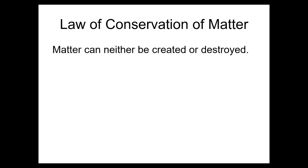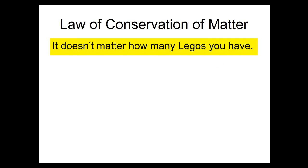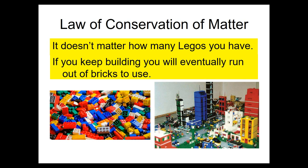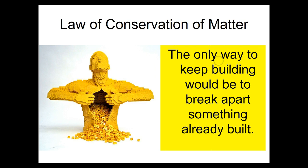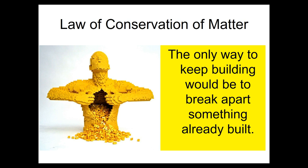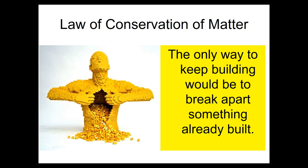We're going to rely on something we looked at in our chemistry unit — the law of conservation of matter, which relates to both mass and energy. Matter can neither be created nor destroyed. It's like Legos: you can keep building and building but eventually you're going to run out of bricks. If you wanted to build something new, the only way would be to break down something you've already built. That's the role of the decomposers. They take things that are already there, break them down into basic building blocks, and the producers can build back up into food and mass used by all the other players.